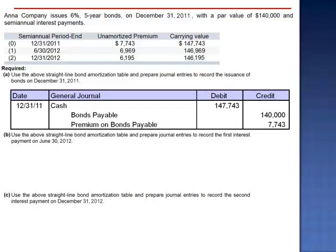The balance in premium on bonds payable will be eliminated over the next 10 semi-annual periods. This is the process of amortization.